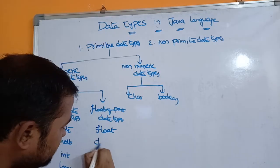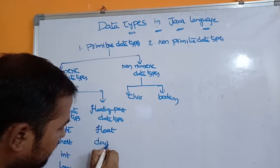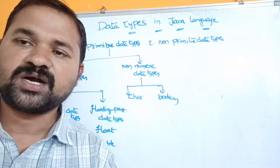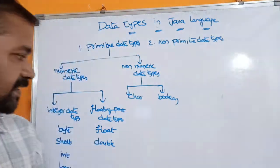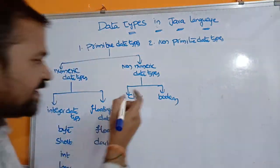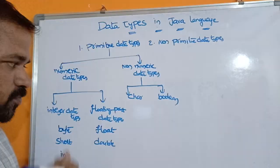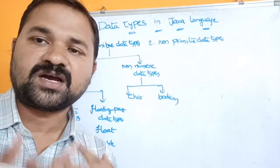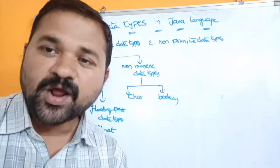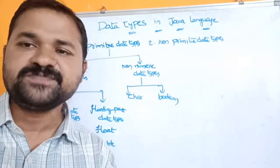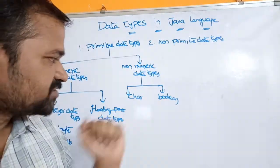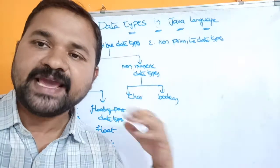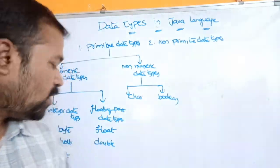The second one is floating point data types. We have two types of floating point data types: the first one is float, and the second one is double. By using these two we can store floating point numbers. We also have a character data type — by using char we can store a single character, which may be either an alphabet, a digit, or a symbol. Next is boolean, which can store either true or false.